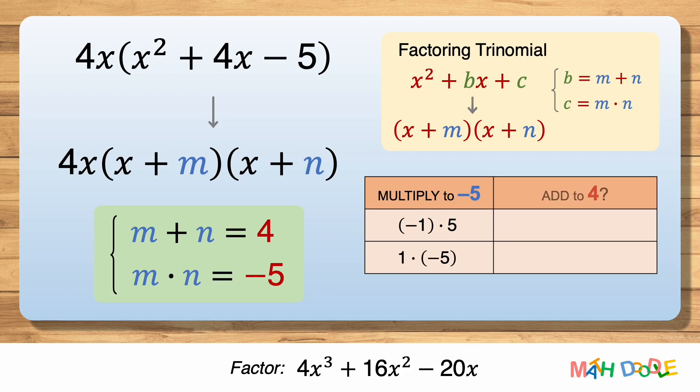Now let's see which of these combinations adds to 4. 1 plus -5 is -4, so 1 and -5 do not add to 4. But -1 plus 5 is 4, so -1 and 5 not only multiply to -5 but also add to 4.